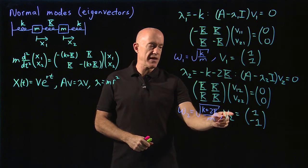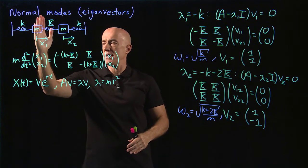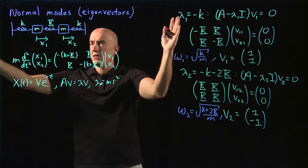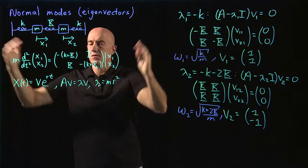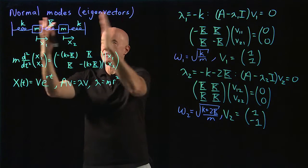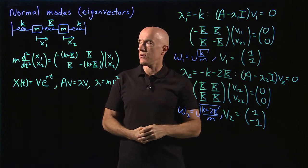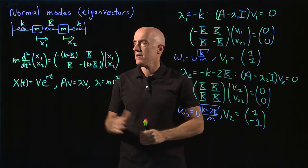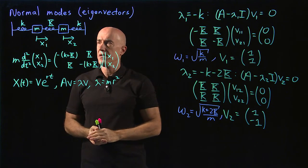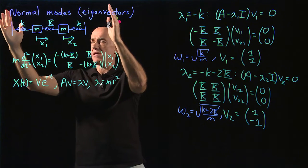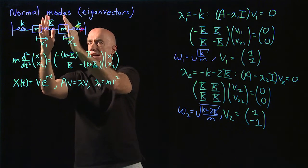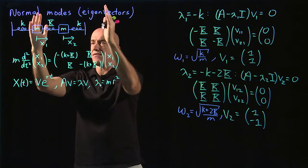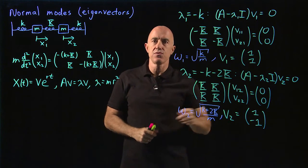The second normal mode has eigenvector [1, -1], meaning when x1 is 1, x2 is minus 1 — the motion is in, out, in, out, with the masses moving opposite each other. That also has a fixed frequency omega two. The effective spring constant is little k plus 2 times big K. The little k comes from the springs on the sides. The factor of 2 on big K comes from the fact that when mass 1 moves right and mass 2 moves left, the middle spring is compressed from both sides, doubling its contribution.